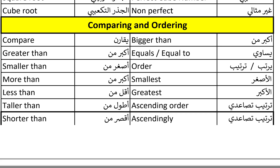Comparing and ordering. The first word: compare. Compare. Greater than. Greater than. Smaller than. Smaller than. More than. More than. Less than. Less than. Taller than. Taller than. Shorter than. Shorter than. And here on the right side: bigger than. Bigger than. Equals. Equals. Equal to. Equal to.